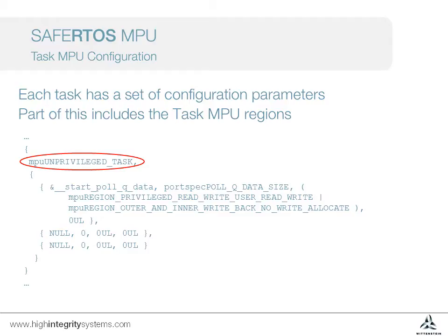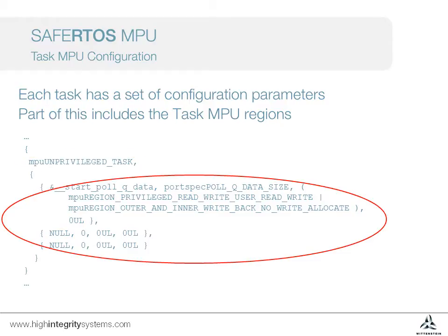In this example, the task is going to run in unprivileged mode with a single user MPU region configured, which will contain all the global data that the task needs to access. This technique is being used to allow us to have a simple example of using the MPU rather than a suggestion for application design. Looking at this structure, we can see each region takes four parameters. SafeARTOS checks these values and if any aren't permitted, an error will be returned at task creation time.